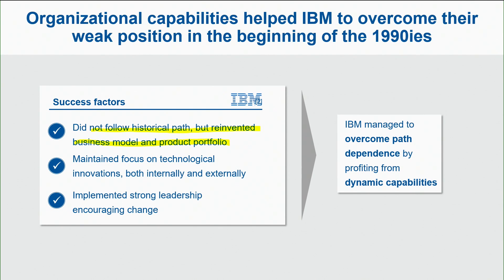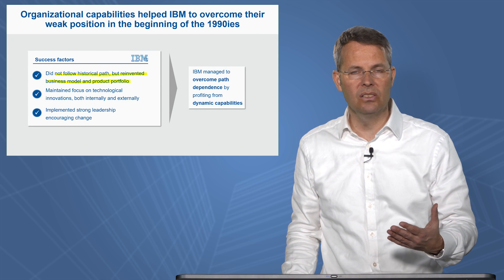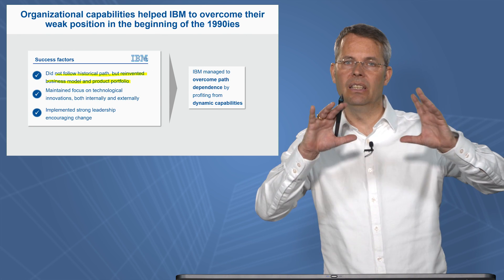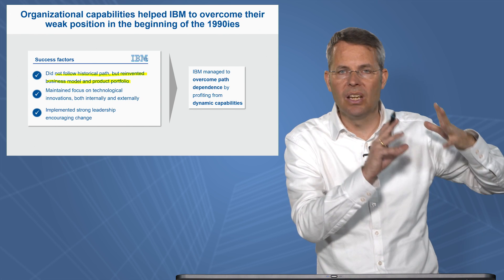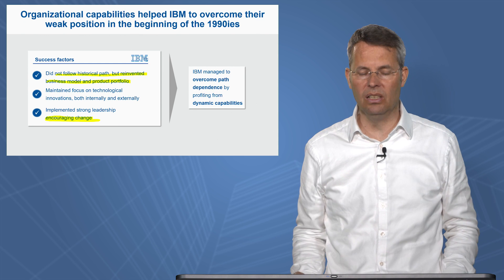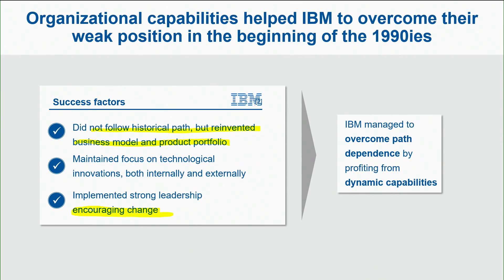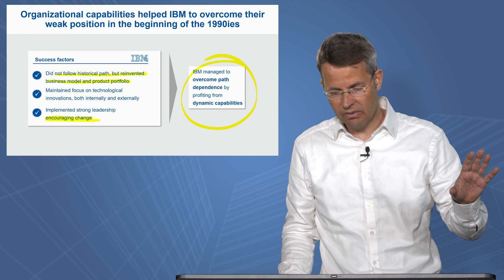They still had the focus on technological innovation, but they encouraged change — not only rethinking the existing products and making them better, but also looking at potentially new products. This is the leadership to encourage change. So IBM in general managed to overcome path dependence by profiting from their dynamic capabilities. They were sensing the opportunities, seizing them, and reconfiguring them.